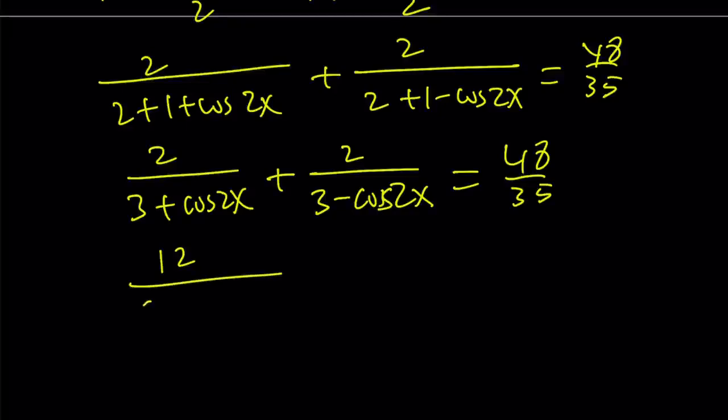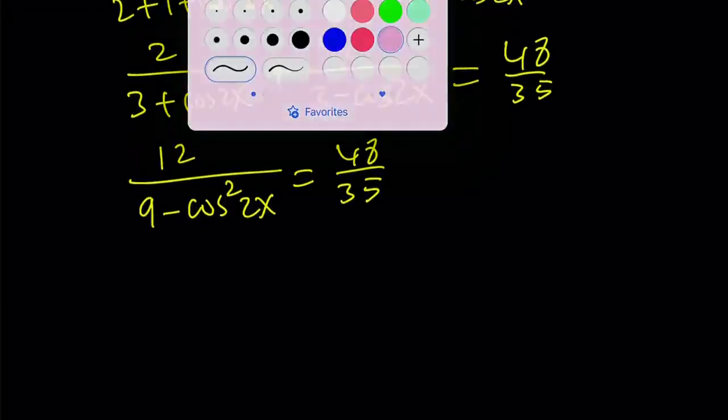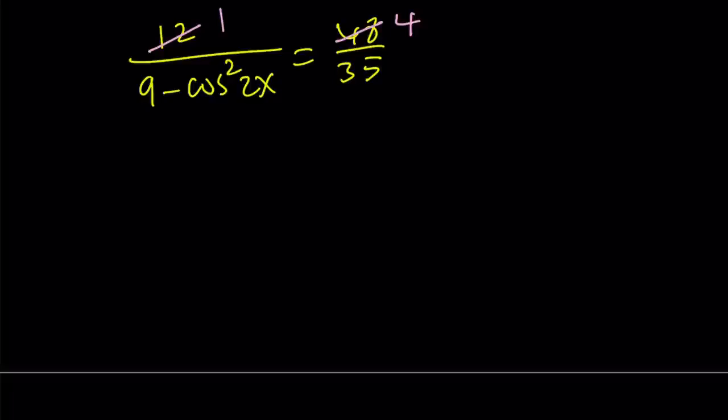12 divided by 9 minus cosine squared 2x equals 48 over 35. So now we can go ahead and simplify this. 12 goes into 48 four times and then if you go ahead and cross multiply, we get 36 minus 4 cosine squared 2x equals 35. And from here, 4 cosine squared 2x must be 1 because 36 minus 1 equals 35.